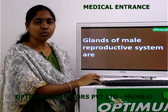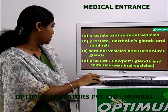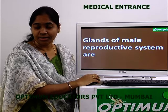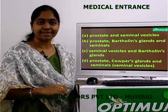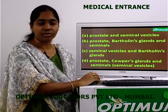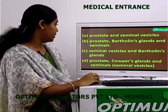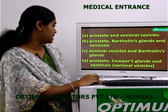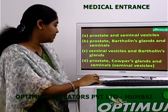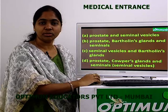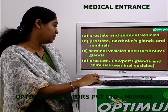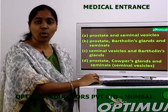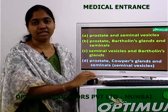Question 6: The glands of the male reproductive system are — Options: prostate and seminal vesicles; prostate, Bartholin's and seminals; seminal vesicles and Bartholin's; prostate, Cowper's and seminal vesicles. Bartholin's glands are another name for the seminal vesicles. The correct answer is option 3: prostate, Cowper's and seminal vesicles.